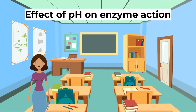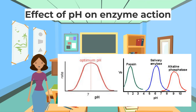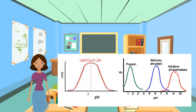You also need to know how to describe and explain the effect of pH on enzyme action. pH also affects and denatures enzymes. Like optimum temperatures, enzymes also have an optimum pH. Optimum pH is the enzyme's preferred pH to work in, giving its maximum rate of activity. Different enzymes have different optimum pH, depending on their site of action.